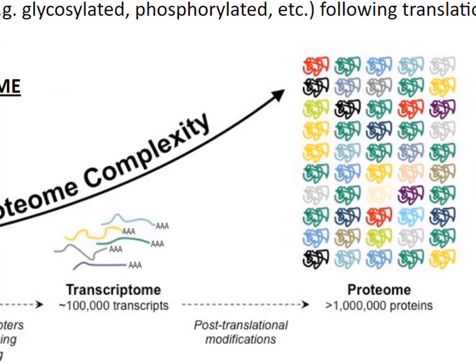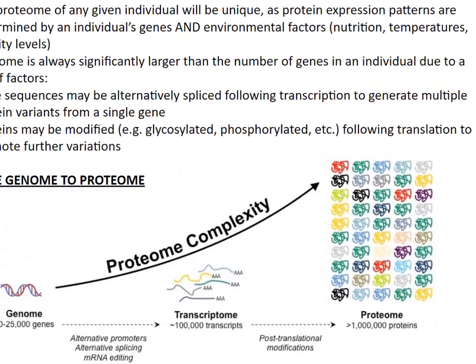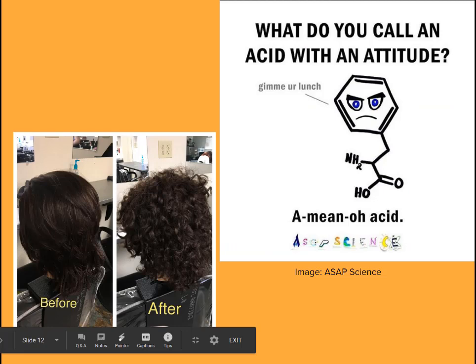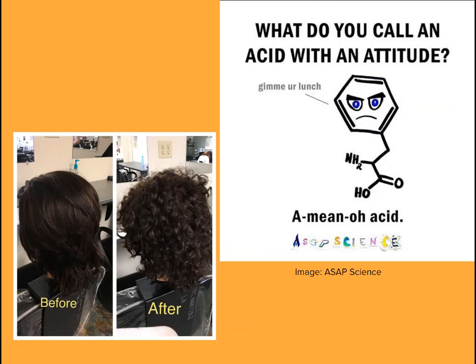Humans synthesize many different types of proteins that have many different functions. Protein functions include structure, hormones, immunity, transport, sensation, movement, and enzymes. There is a mnemonic for this which you can see at the bottom of the slide. You have to know these examples and the types of functions. Hopefully my presentation hasn't caused your brains to denature, and that you recognize the importance of the macromolecules called proteins.